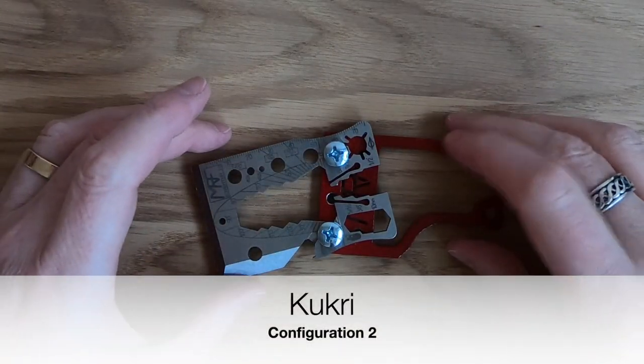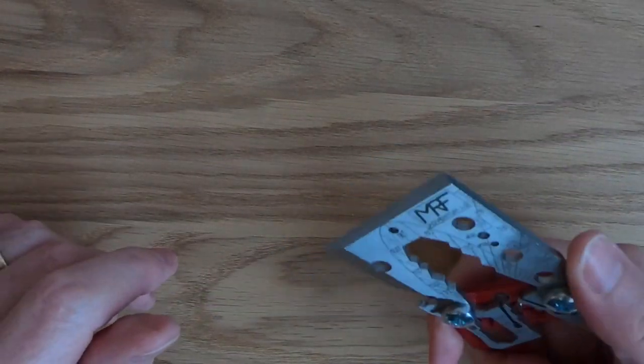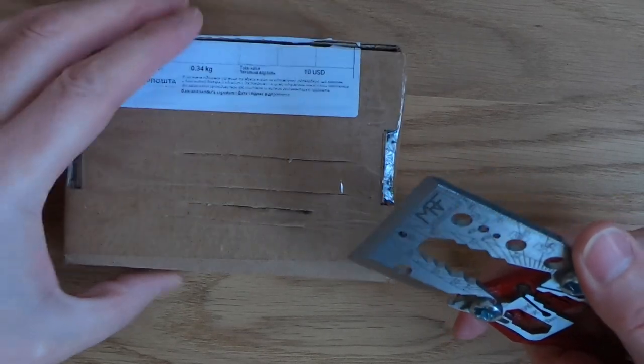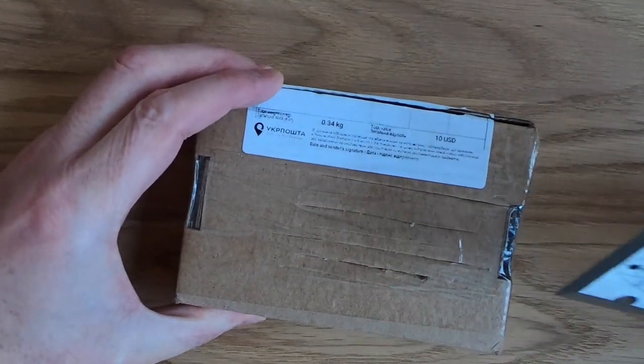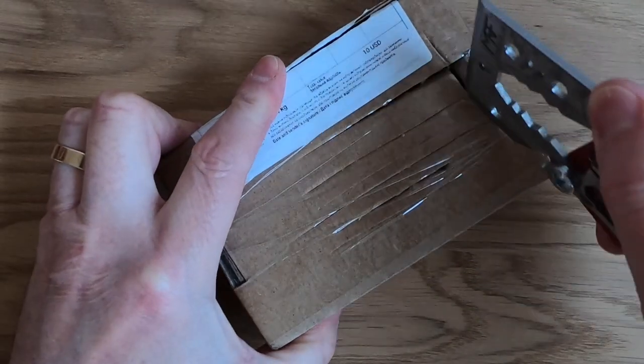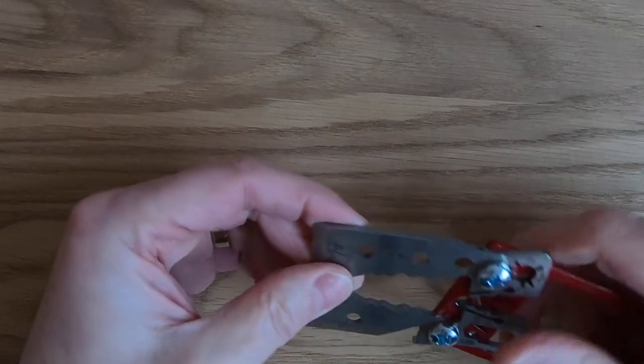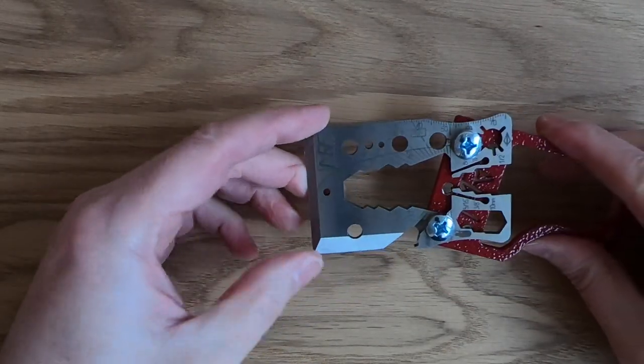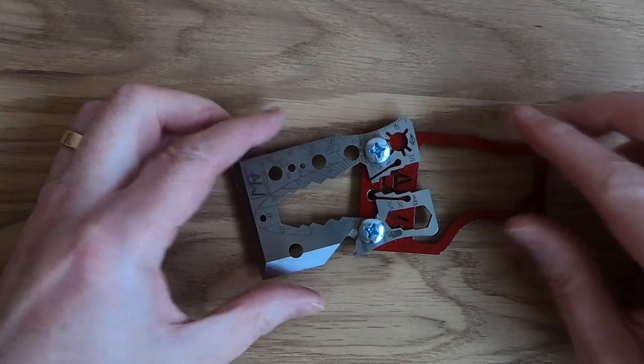Your next configuration is the kookery configuration. You can see we've got this on the angle now. So when we pick this up and use it in conjunction with the handle again, we've got a nice cutting edge but with a bit more of an angle, so we can get a little bit more leverage, a little bit more purchase on there. As you can see, it's cutting through that absolutely easily. Can't help thinking that would be really useful if you were gutting fish or something. So that's the second configuration, the kookery configuration.